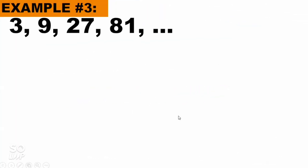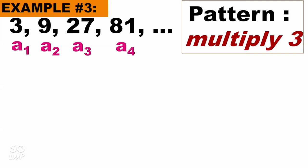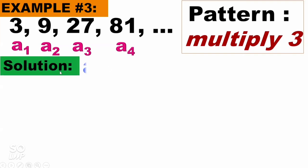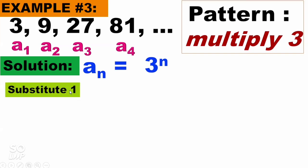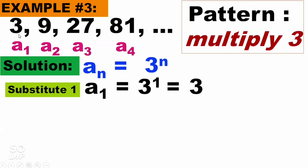Example number 3: 3, 9, 27, 81 — a sub 1, a sub 2, a sub 3, and a sub 4. The pattern is we multiply by 3: 3 times 3 equals 9, times 3 is 27, times 3 equals 81. For the solution, since the pattern is multiplication by 3, we write a sub n equals 3 raised to n. Try substituting 1 for the first term: a sub 1 equals 3 raised to 1 equals 3. Correct.